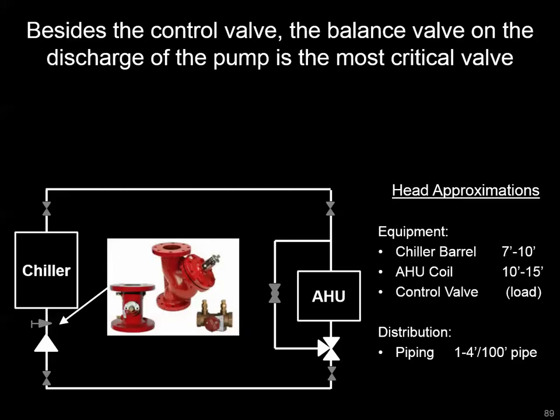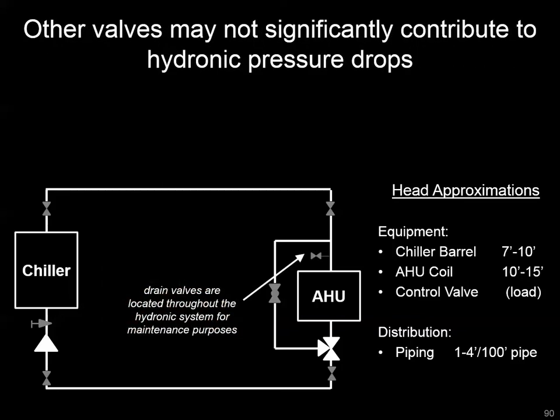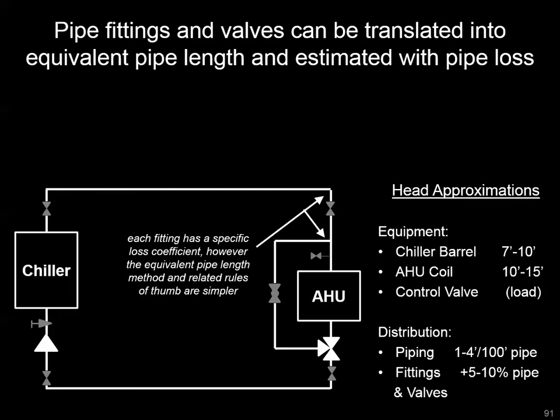Here's what some of those balancing devices might look like — triple duty valves, circuit setters. You'll also have drain valves located throughout the system used for maintenance purposes; they might be a source of leaks, so pay attention to those. There'll also be a number of tees and elbows running through the system. Instead of counting the pressure drop across each one, there's a rule of thumb that says somewhere between 5 and 10 percent of your pipe length should be added to your distribution calculation to account for that pressure drop.